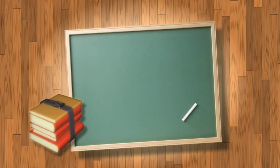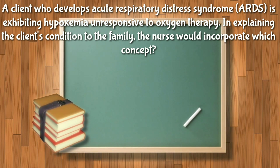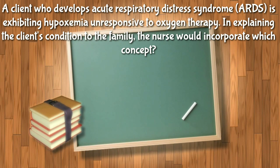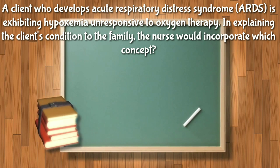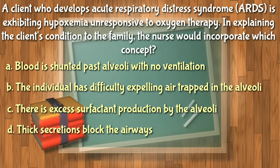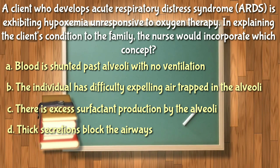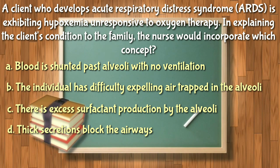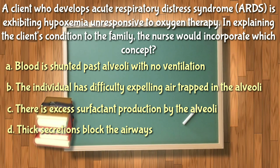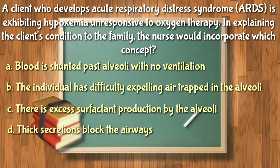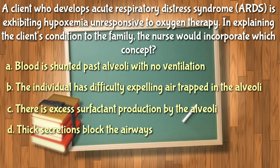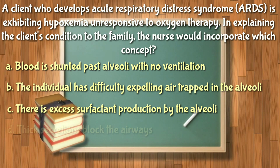Next question: A client who develops acute respiratory distress syndrome (ARDS) is exhibiting hypoxemia unresponsive to oxygen therapy. Which concept would the nurse incorporate when explaining the client's condition to the family? One primary alteration occurring with ARDS is the collapse of alveoli and therefore loss of ventilation in those areas. Thick secretions blocking the airways are not a consideration, so letter D is eliminated.